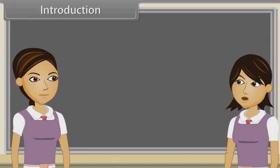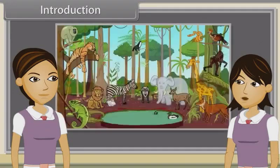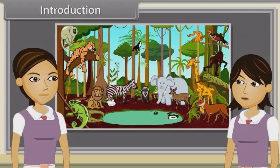Sharmila, in a few words define an animal. Yes, animals are a major group of mostly multicellular, eukaryotic organisms of Kingdom Animalia or Metazoa.